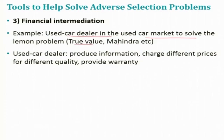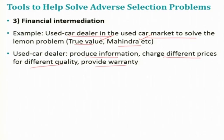In India, there is Maruti True Value and Mahindra used car markets, for example. In the used car dealer market, dealers obviously have more expertise — they produce information and charge different prices for different quality. In addition, they also provide warranty. Since dealers have already established a brand value, they have to maintain that value. So they will try to acquire only those cars that are good quality; if some cars are bad quality they will sell them at a low price. They make different prices for different types of cars because they have better information about the cars they are buying and selling.